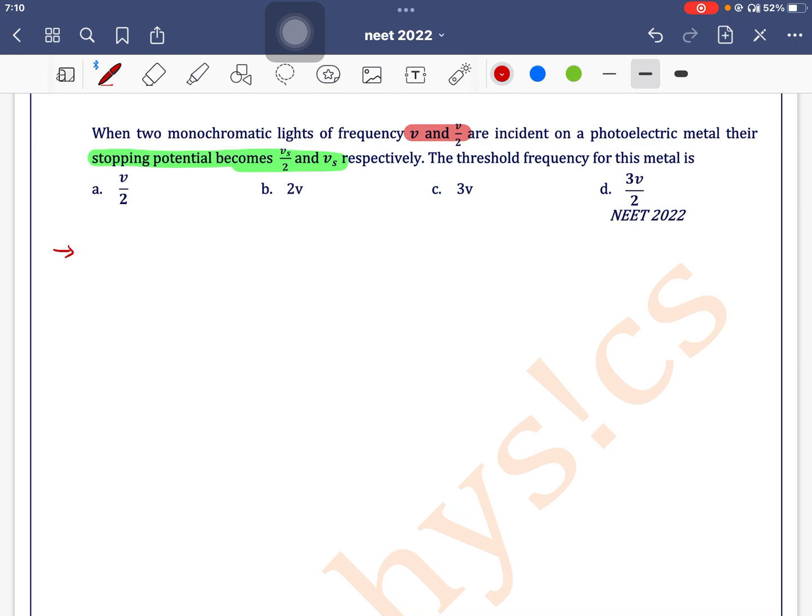It is given that we have two monochromatic lights of frequency nu and nu by 2, and stopping potentials Vs by 2 and Vs. We know that the relationship between stopping potential, incident frequency, and threshold frequency...